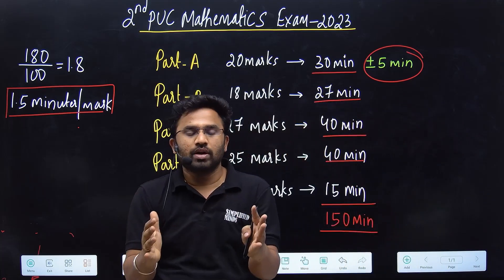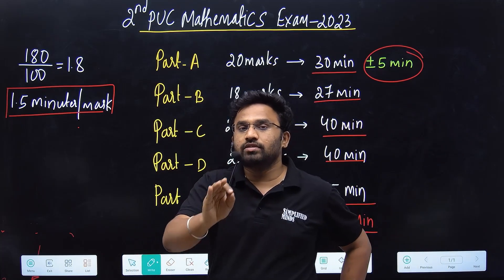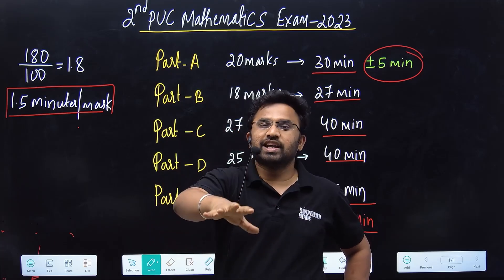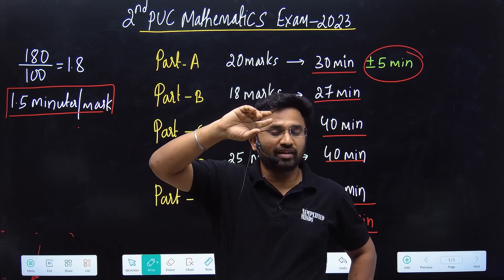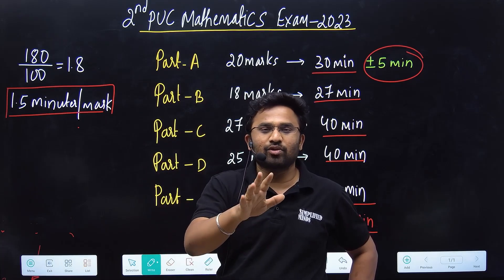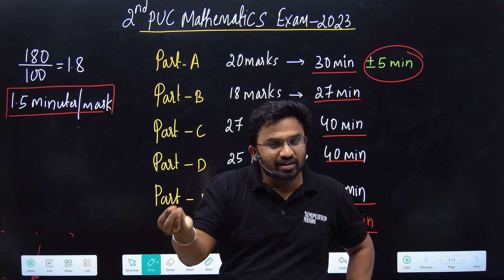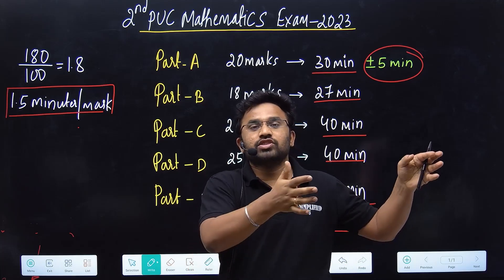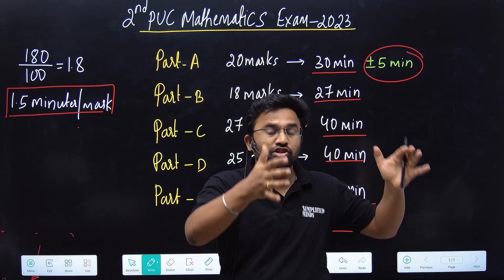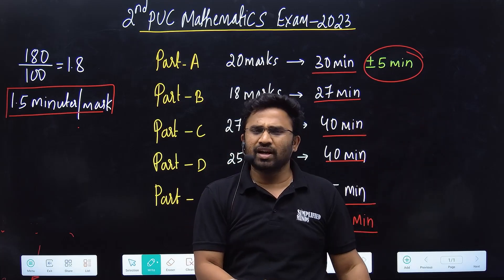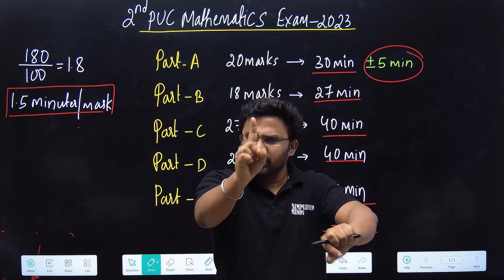Make sure the section you choose first is one you know very well and can present well. Fix exact times. For example, if the exam starts at 10:30 and you choose Part D as your first section, you can give it a maximum of 40-45 minutes. So if you start at 10:30, you should finish that section by 11:15.